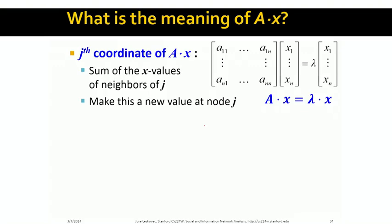So now that we have understood what is the meaning of A times x, we can start asking about what happens if we are thinking about this matrix in a bit different way. And in particular, let's think about the eigenvalue problem.